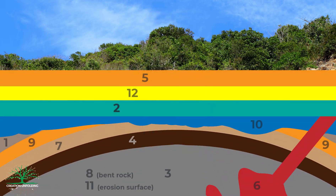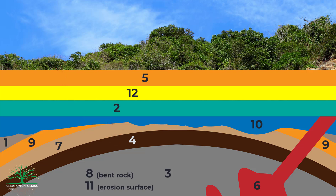Let's now try and put all four principles to work to see if we can figure out the relative geologic history recorded in this diagram. This is the underground view for a series of geologic rock structures numbered 1 through 12. Keep in mind that bent rock and erosion surfaces like this are also geologic structures. Based on what we've learned, can you figure out the relative sequence of events and which principle to use for each choice?